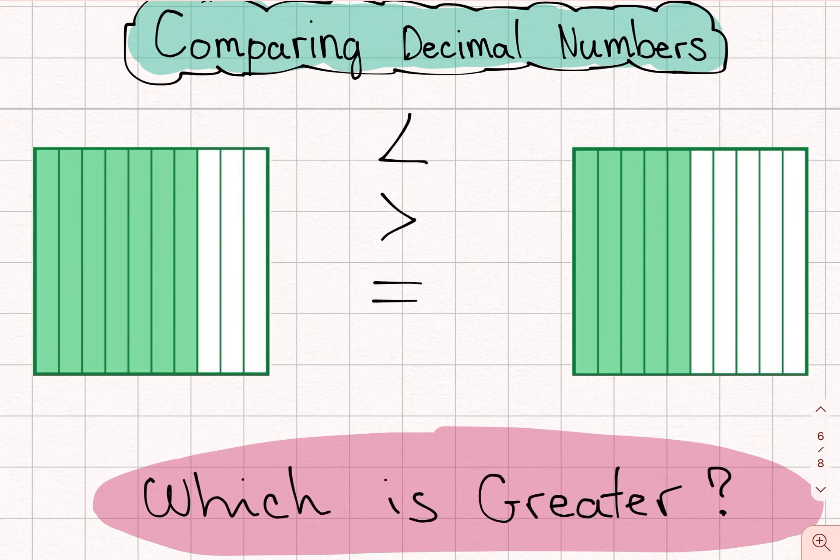So another easy way to remember is that this is small and this is big. So if we're using this symbol here, this side here is greater and this side here is less than. This one would be the opposite. This is greater, this is less than. And of course, this is an equal sign down here.